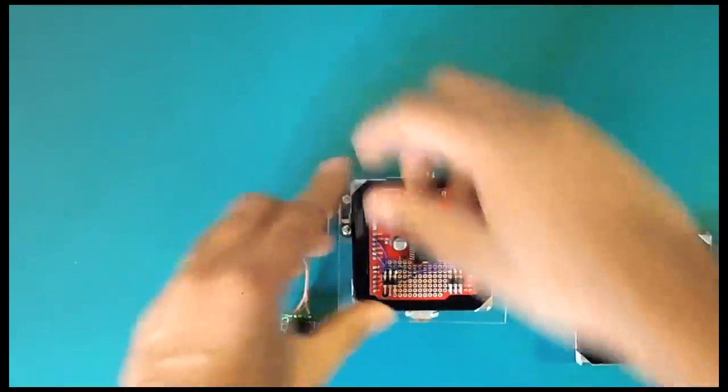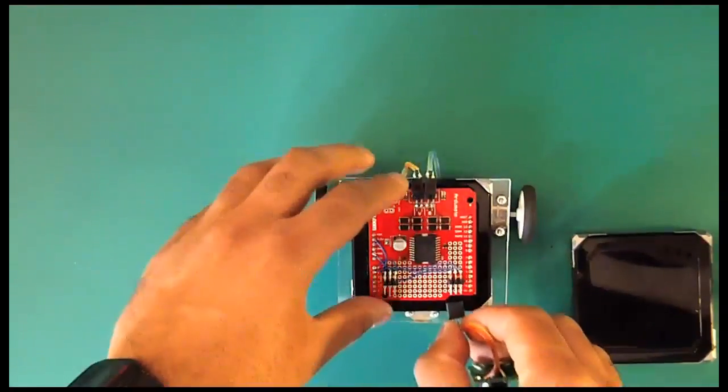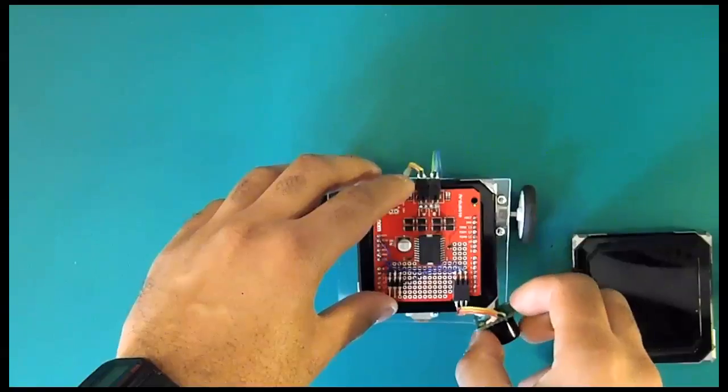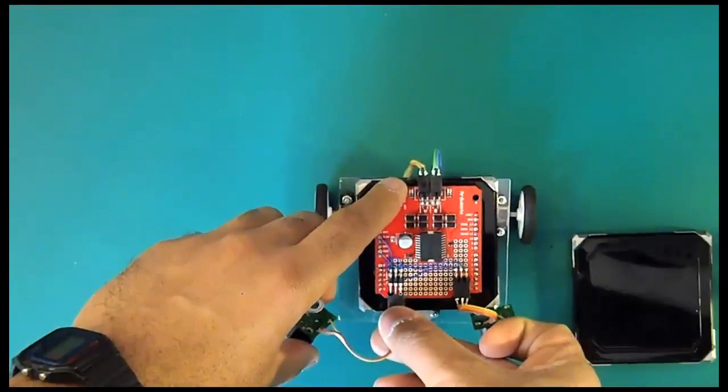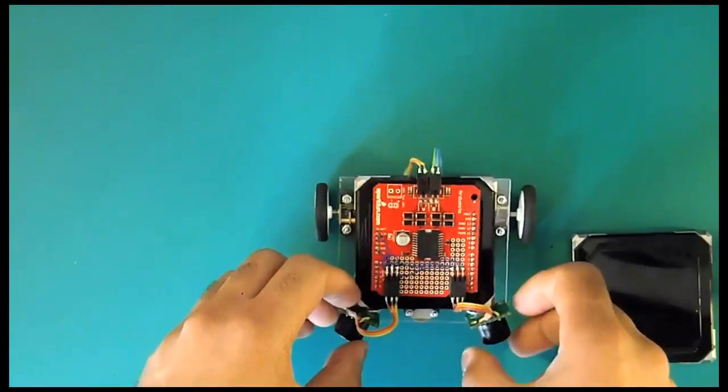and then plug in the left and right sensors, and just let them click on to the front of the Arduino square like so.